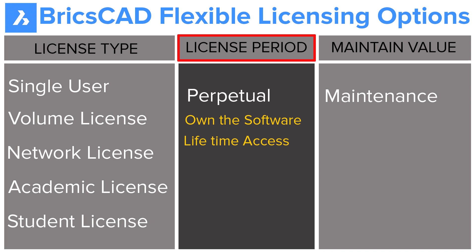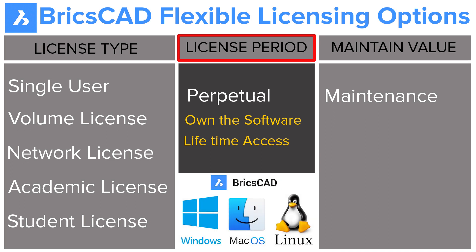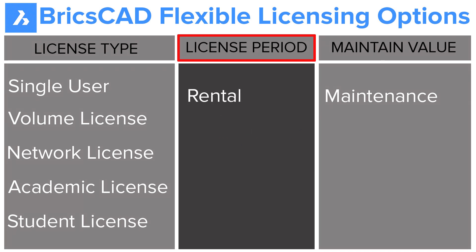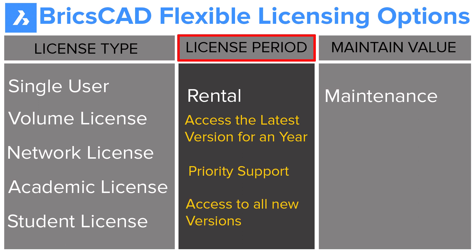The product activation key authorizes its users to use a specific version of BricsCAD. BricsCAD editions run on Microsoft Windows, Mac OS and Linux. When you choose a rental option, you have access to the latest version of BricsCAD for a year. It includes priority support and access to all new versions released during the time your subscription is active.